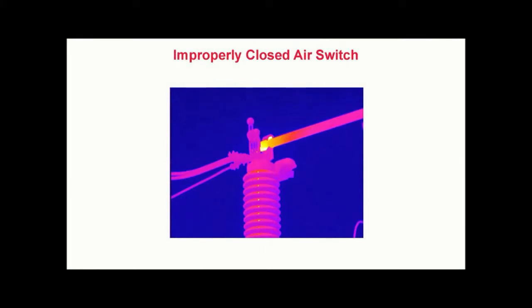Improperly closed air switch. In this thermogram from an outdoor substation, we see localized heating within the jaw of a large air switch. In this image, excess heat is shown in yellow and white.